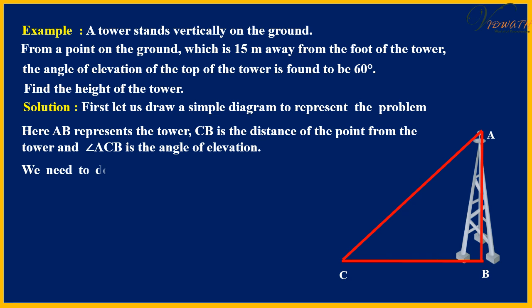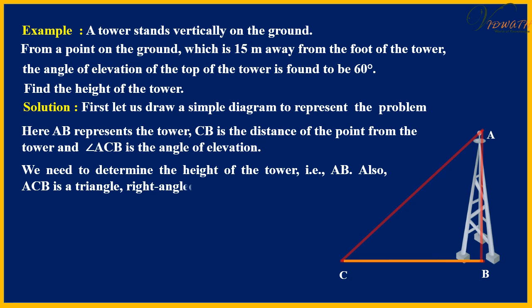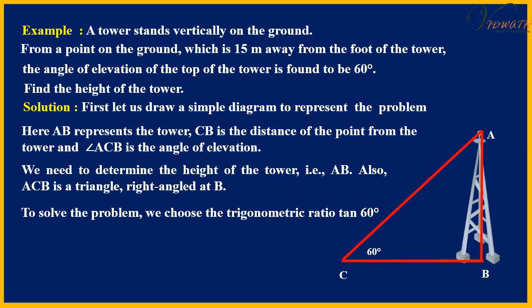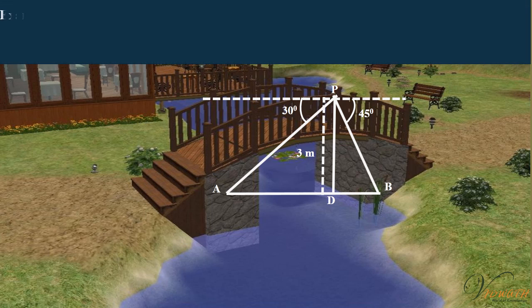Also, ACB is a triangle right-angled at B. To solve the problem, which trigonometric ratio? Tan 60 degrees, as the ratio involves AB and BC.